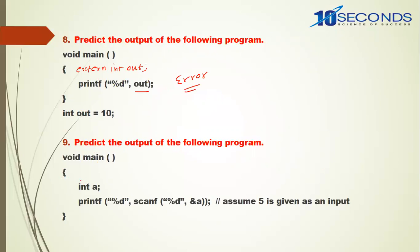Predict the output of the following program: void main — int a — printf %d scanf %d &a. Assume 5 is given as input. The program prompts for input because of the scanf statement, so you type 5 and it sits in a. printf %d — scanf accepted one value, so it returns 1. The output of the program is 1, because scanf accepted one number and returns 1.